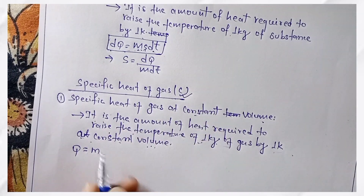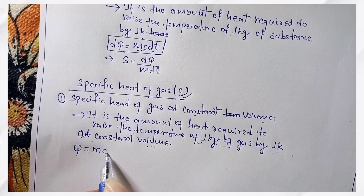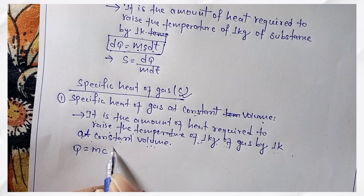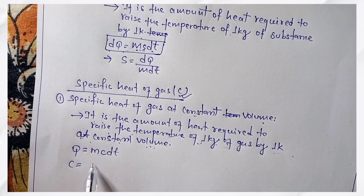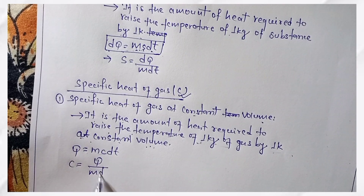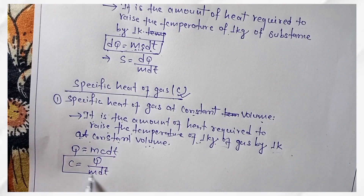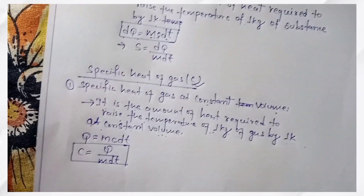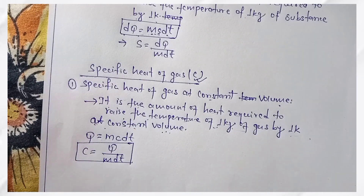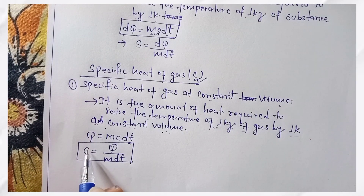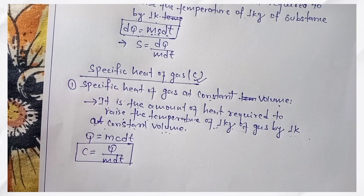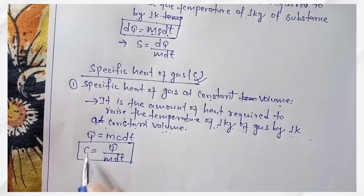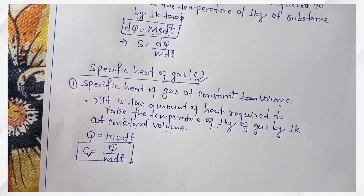We denote it as Cv. The mathematical form of Cv: Cv equals to Q divided by M DT, at constant volume. We have to keep the volume constant in this formula.